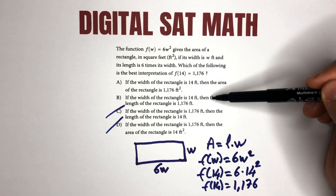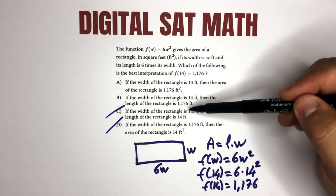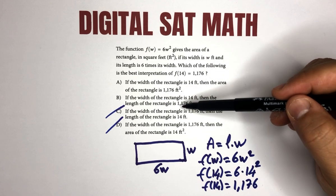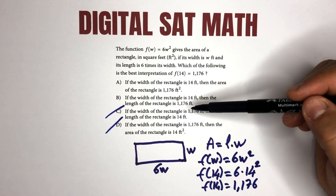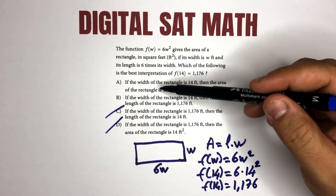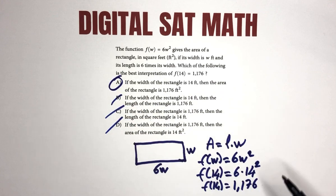But if the width—choice B: if the width of the rectangle is 14 feet, then the length of the rectangle—no, it's not the length. Where the 1,176 is, it is the area as it was indicated in choice A. You can go ahead and choose your answer for this problem as A.